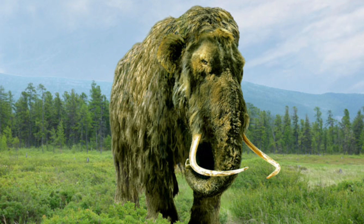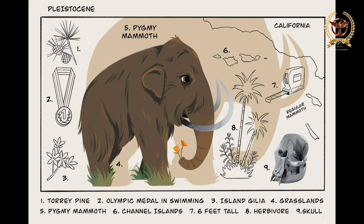Between 800,000 and 400,000 years ago in Siberia, mammoths evolved from M. Trogontari with 26 tusks, which became woolly mammoths. These woolly mammoths replaced the steppe mammoth in Europe in the late Middle Pleistocene about 200,000 years ago.